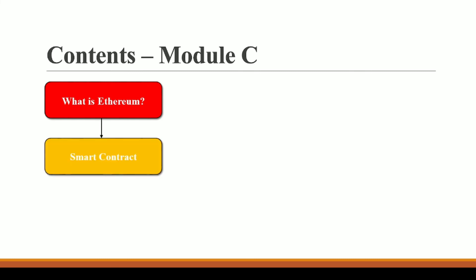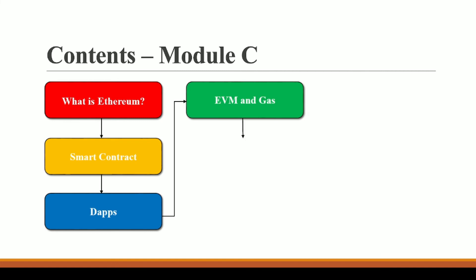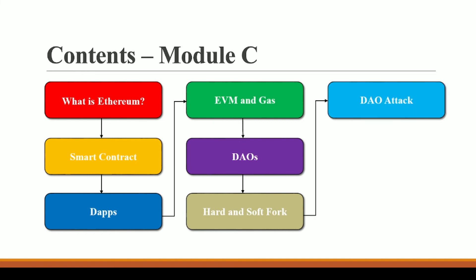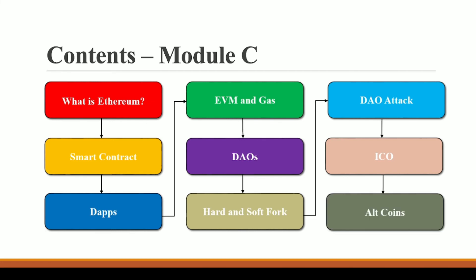In Module C we are going to talk about what is Ethereum, then smart contracts — programs written on Ethereum — then decentralized applications, EVM, and gas. We will also cover DAOs — decentralized autonomous organizations — what is a hard fork, what is a soft fork, the DAO attack on Ethereum, ICOs — initial coin offerings — and finally altcoins, which are coins other than Bitcoin.